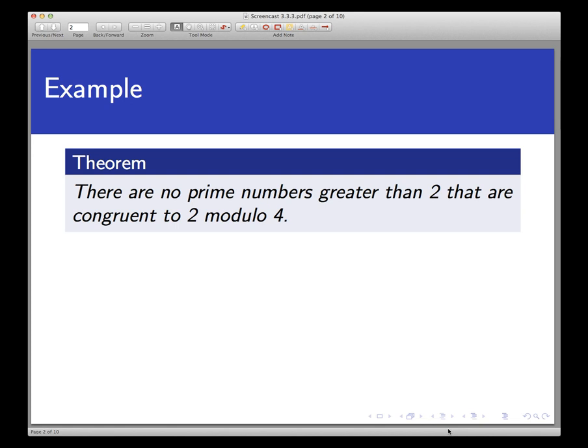Generally speaking, proof by contradiction is very useful when you're trying to prove a statement that is given in a negative form, like something doesn't exist or two quantities are not equal, which is what we saw in our first screencast, or that an object does not belong to a certain set.